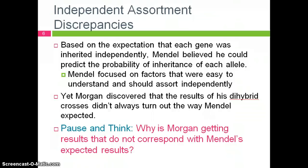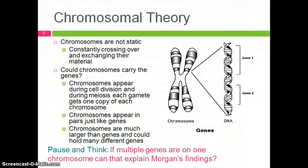Now, I want you to take a moment and think about this. Why is Morgan getting results that do not correspond with Mendel's expected results? One option that Morgan began to explore was chromosome theory and the possibility that chromosomes were the carriers of genes. Recall that chromosomes are not static — they are constantly crossing over and exchanging material with their other chromosome pair.